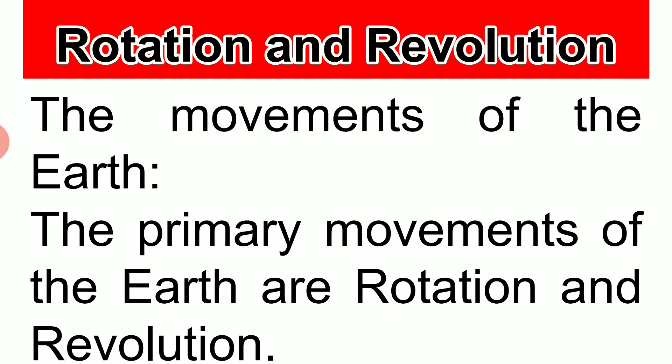The primary movements of the earth are rotation and revolution. Since earth is the only planet with life on it, all these movements of the earth affect the types of plants and animals inhabiting the earth because of the varying amount of sun's heat reaching the various parts of the earth due to earth's spherical shape and inclination of the axis.